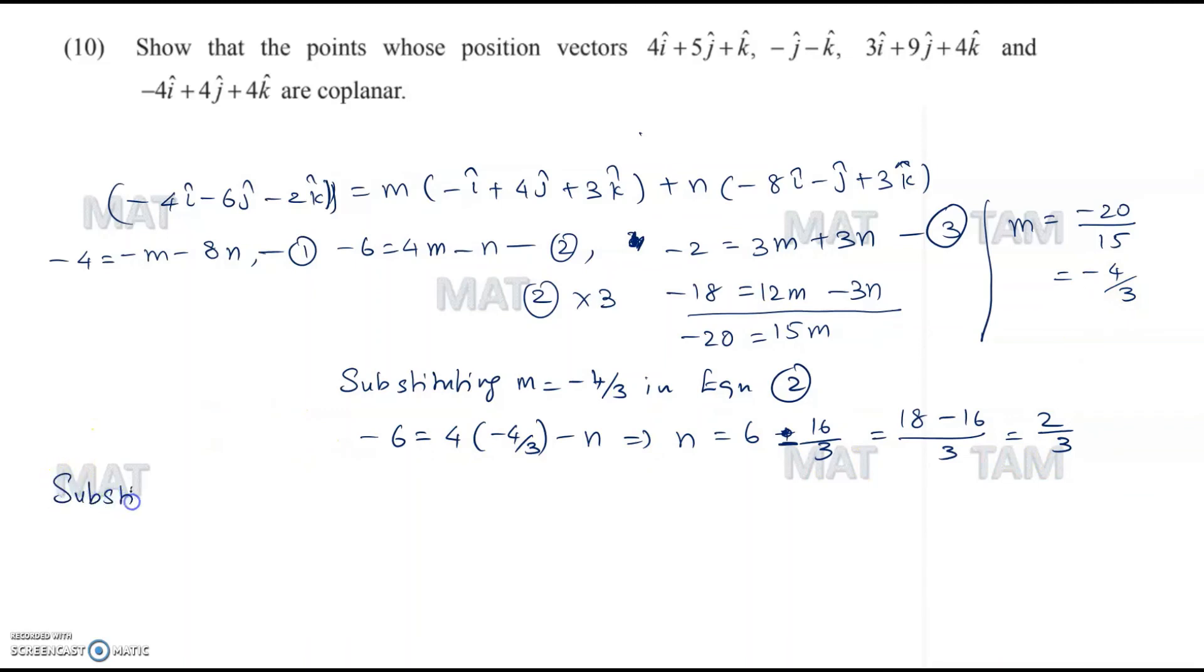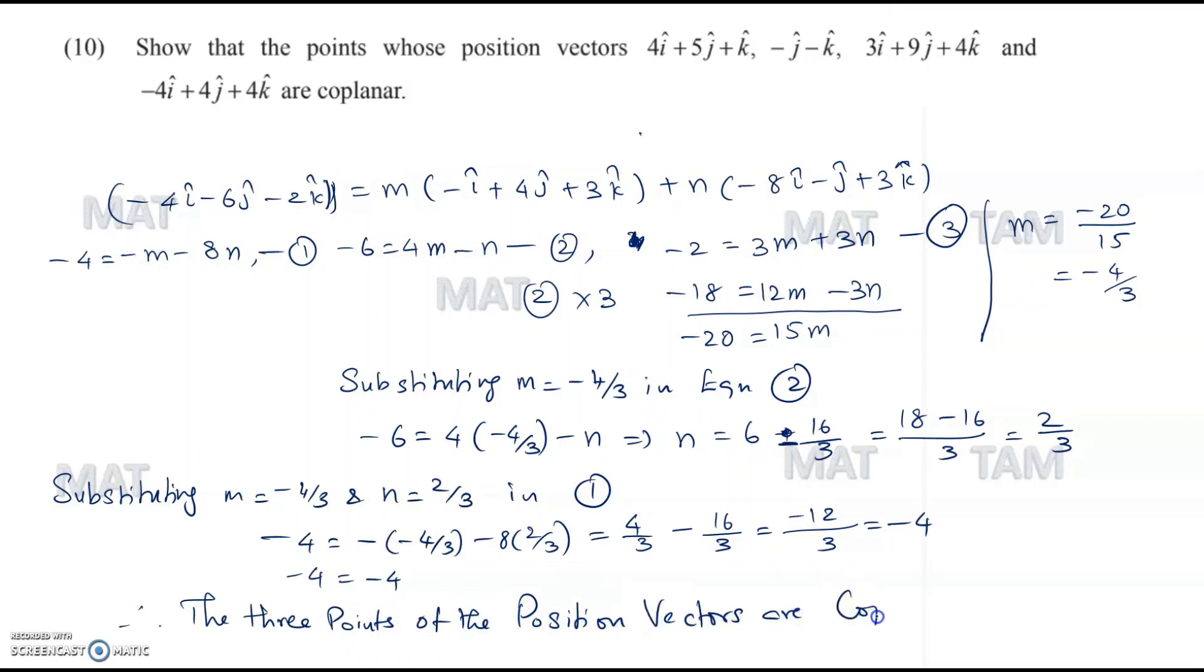Substituting M is equal to minus 4 by 3 in equation 1, we get minus 4 is equal to minus 4 by 3 minus 8 times 2 by 3. Simplifying this, you will get 4 by 3 minus 16 by 3, which is equal to minus 12 by 3, which is minus 4. Minus 4 is equal to minus 4. Therefore, the 3 points of the position vectors are coplanar.